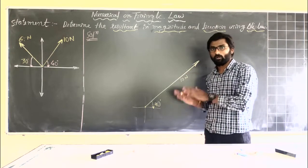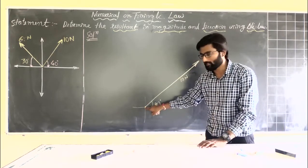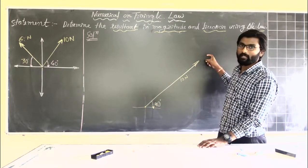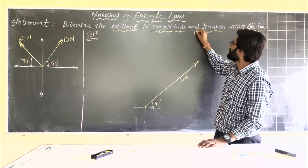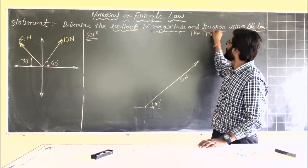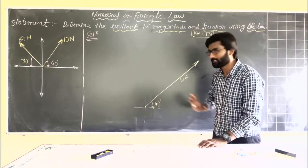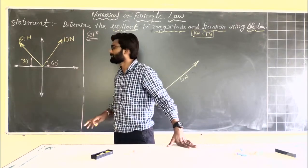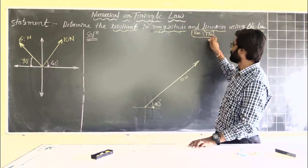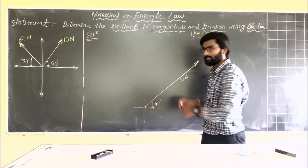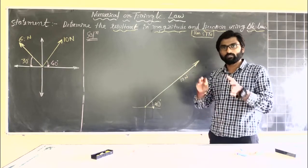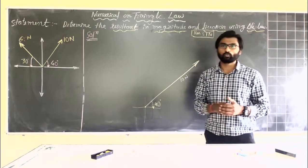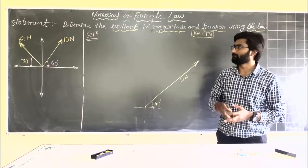If going graphically, on graph paper start from a particular point as the origin, use a protractor, draw a line, and mark the length. With a scale of 1 cm = 1 N, on a line making 40 degrees, measure 10 centimeters and mark it for the 10 newton force. Here, since we are using the analytical approach, we approximately keep scale in mind so we can differentiate between the two magnitudes — 10 and 6 newton.